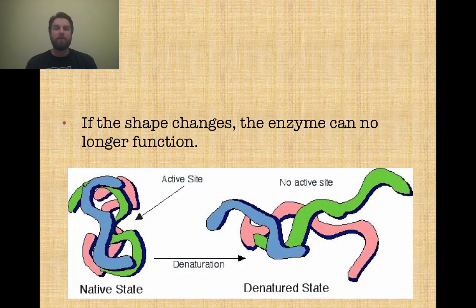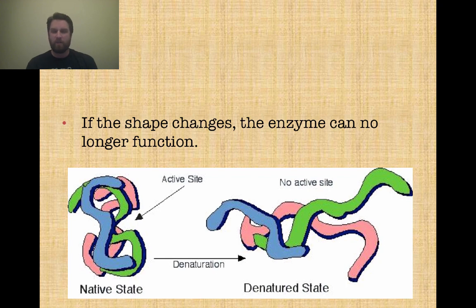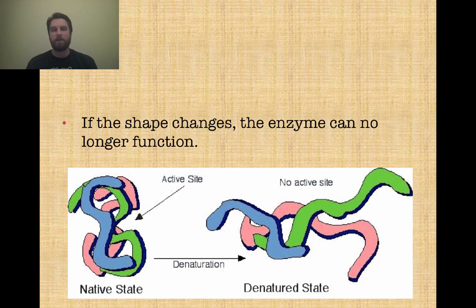So what does it look like when the shape changes? In the native state on the bottom left, there is an active site visible on the right side — just a normal-looking enzyme. But if it denatures and starts changing shape, sometimes the active site will no longer be available, and thus that enzyme can't do anything. That's a good look at the native state versus the denatured state of an enzyme.